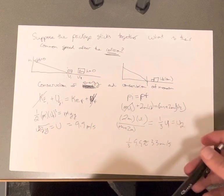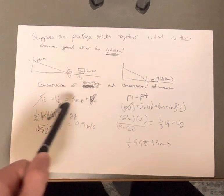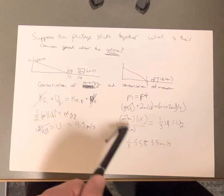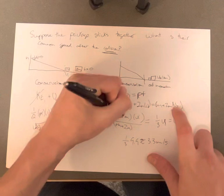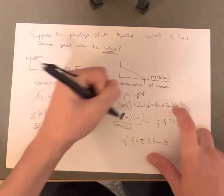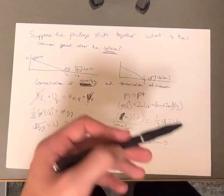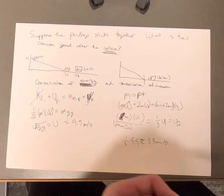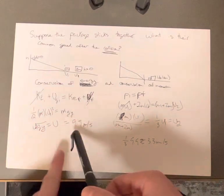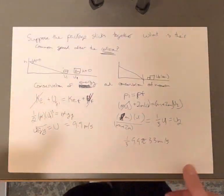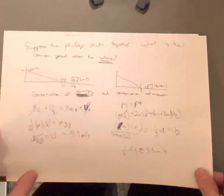The 2M package was at rest, so that term cancels out. Solving it out, the combined mass is 3M, giving us M over 3M, which equals one-third the velocity. Since that velocity of M was 9.9 m/s, we end up getting 3.3 meters per second as how fast they're moving together after the collision.